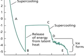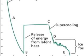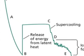Supercooling is achieved by dramatically increasing the rate of cooling. When a liquid is below its standard freezing point, it will crystallize in the presence of a seed crystal or nucleus, around which a crystal structure can form.